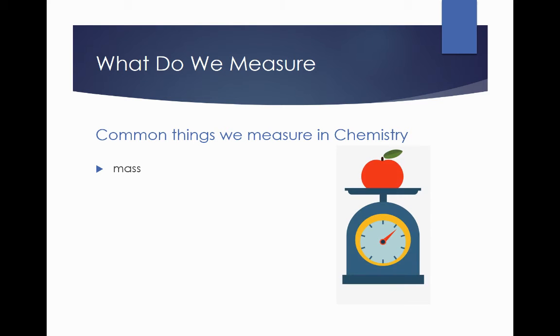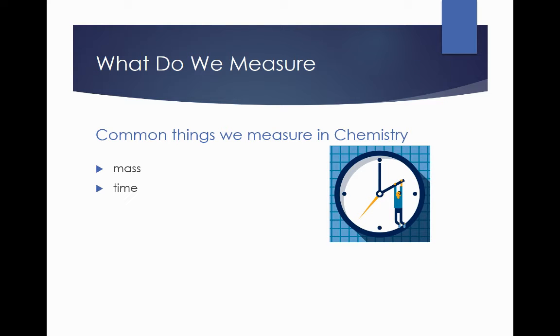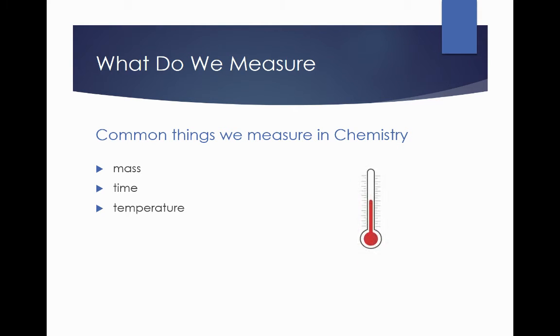First thing we have is mass. Now what kind of masses have you encountered and what did you use to measure mass? The second thing is time. Were there experiments that you have performed involving time? What apparatus do you use to measure time? Third, temperature. Were there things that you have done that involved temperature? And what did you use to measure temperature?